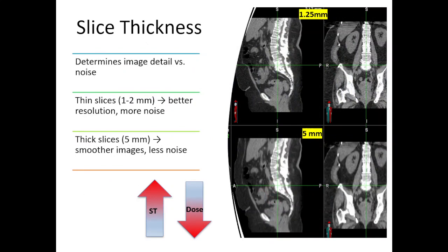Slice thickness affects the resolution of the scan. Thin slices provide more anatomical detail but can be noisier, while thick slices reduce noise but may blur small structures. The choice depends on the clinical need. For example, for cerebral perfusion studies where identifying large infarcted areas is crucial, a 5 mm slice thickness is sufficient to minimize unnecessary radiation dose. For visualizing tiny vessels, a much thinner slice thickness is required. Modern CT scanners can achieve slice thickness as small as 0.5 mm for high-resolution imaging.